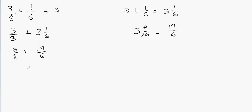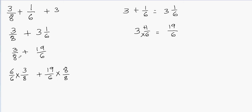Now we need to add the fractions. When we add fractions, remember that we need the denominators to be the same. Since our denominators are different — 6 and 8 are not multiples of each other — we need to multiply both fractions by something to get equal denominators. So I'll multiply each fraction by the other fraction's denominator. I'm going to multiply 3/8 by 6/6, and then multiply 19/6 by 8/8. This way we get the same denominators.